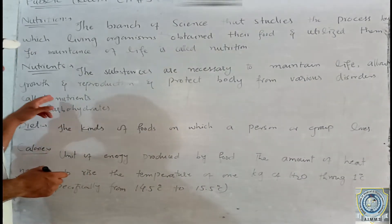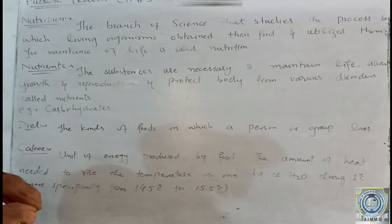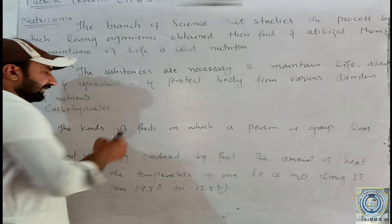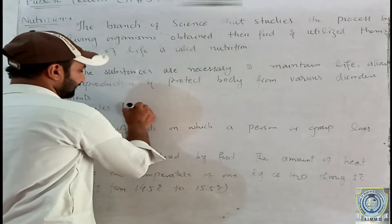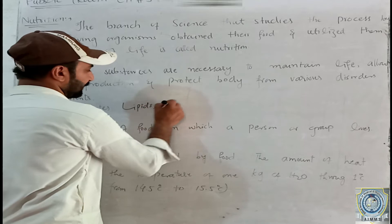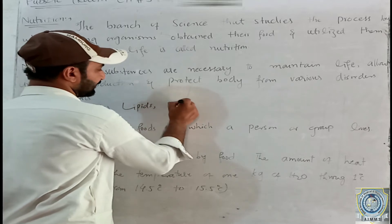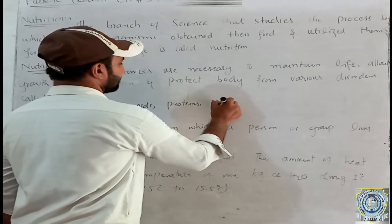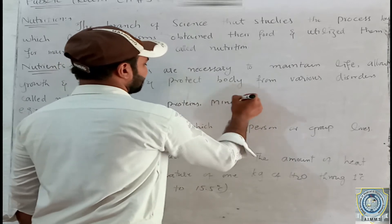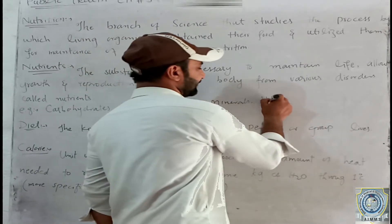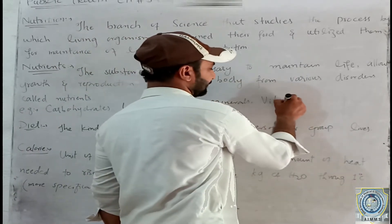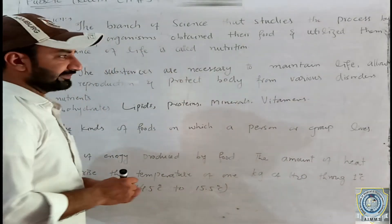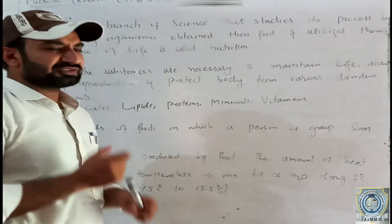Now, also the nutrients. Nutrients — there are different types: carbohydrates, lipids, proteins, minerals, vitamins. These are the main nutrients.